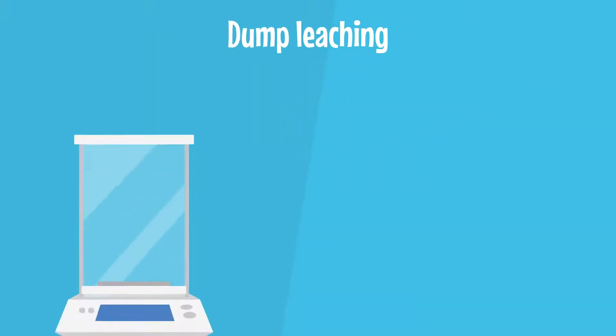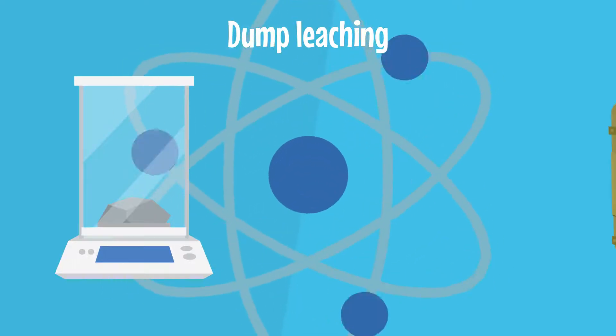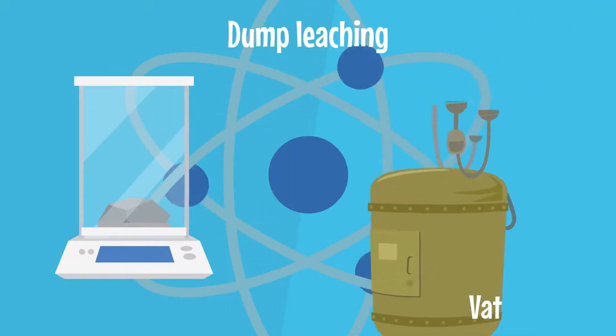Dump leaching is a similar concept except the ore is placed in a sealed pit. And for agitator leaching, the ore is placed in a tank called a vat that is shaken to speed up the bioleaching process.